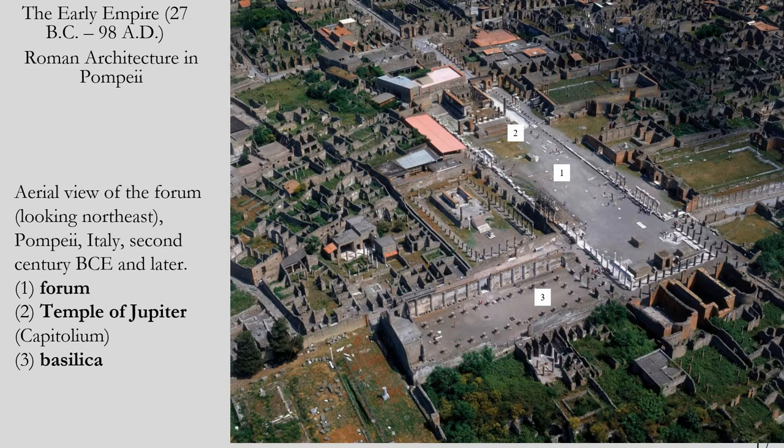This is the center of Pompeii. Like most Roman cities, the center of town was called the forum — where the Roman government buildings were, where the Senate would be located. There was also usually a temple — here we have the Temple of Jupiter, the main god in the Roman pantheon — and then a basilica, which functioned as courts and the central civic building of the town. Everything else was built around these structures. The Roman government and the Roman people are literally taking center stage at the center of town.